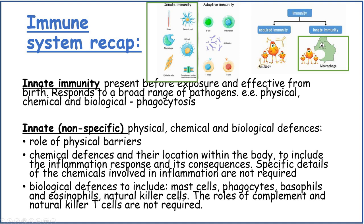Biological defences include mast cells, phagocytes, basophils, eosinophils, and natural killer cells. The roles of complementary proteins and natural killer T cells are not required.